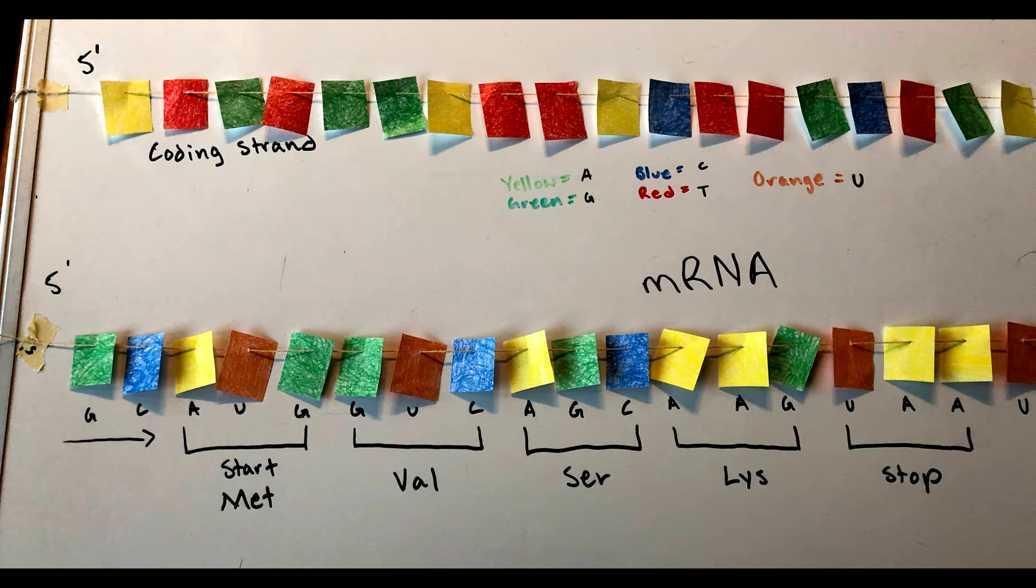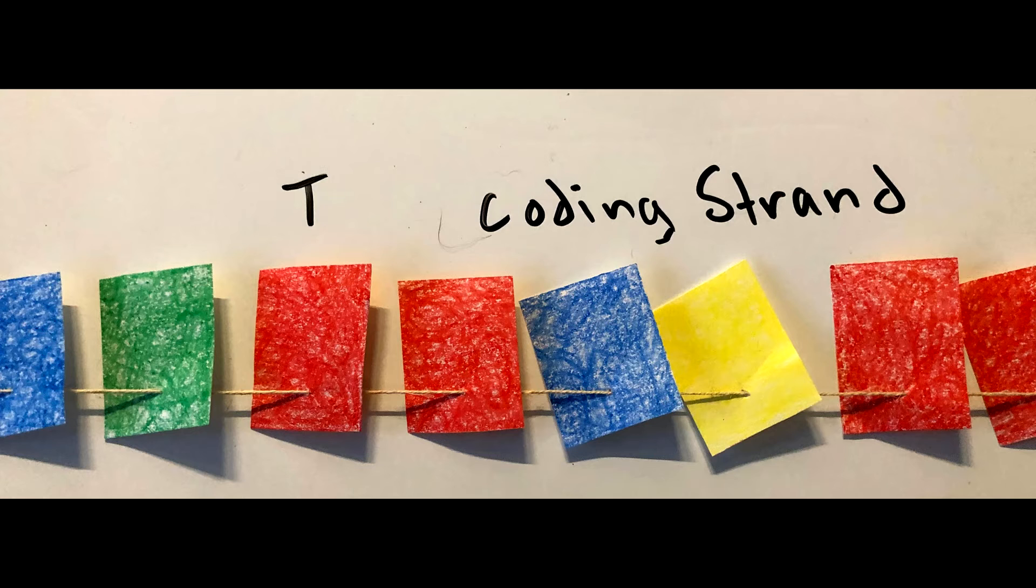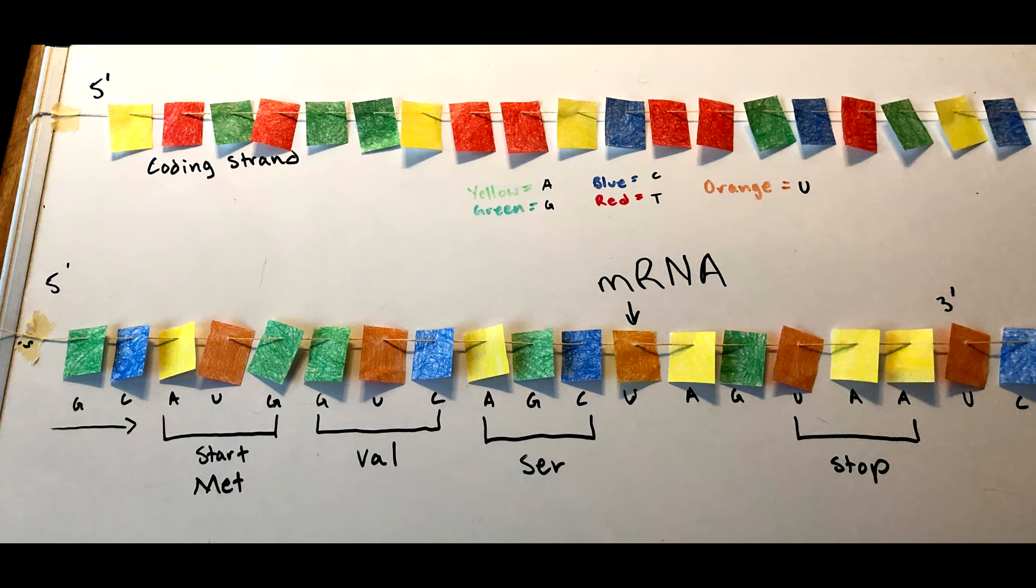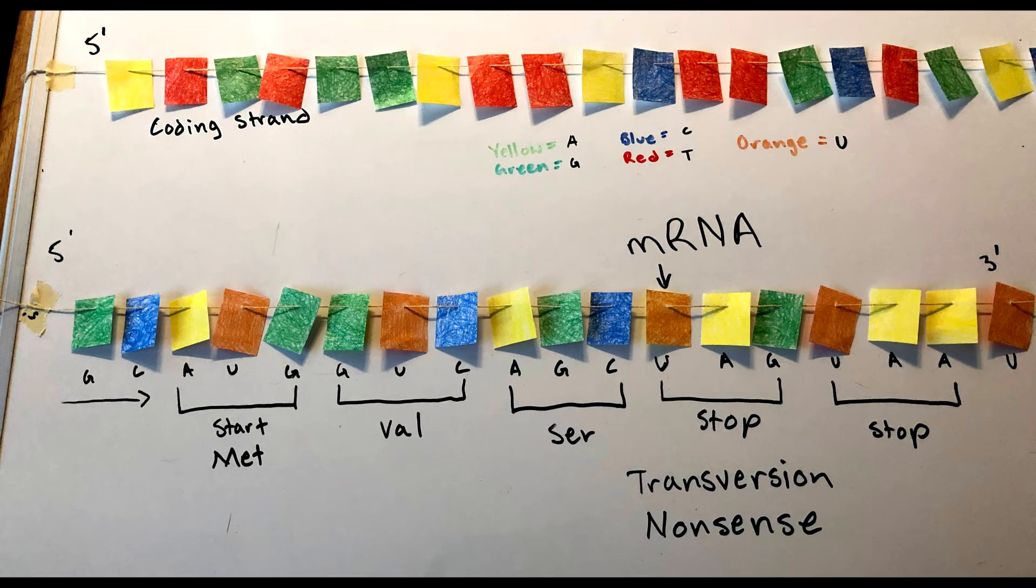Let's revert back to the original strand and say that this T in the coding strand is mutated to an A. Then this nucleic acid will be a U and will no longer be translated to lysine, but will instead become a stop codon.